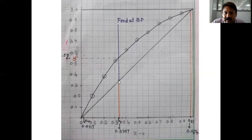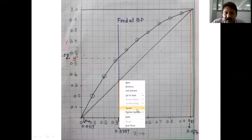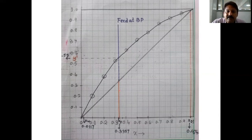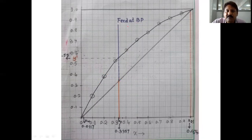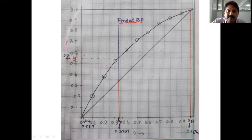The q-line indicates the feed condition. If the feed is at its boiling point (saturated liquid), the q-line is vertical. If sub-cooled it slopes one way, if superheated vapor another way. Since the feed enters at its boiling point, the q-line here is vertical, drawn from xF = 0.3357 straight up. If the feed condition is not specified, always assume feed at its boiling point.